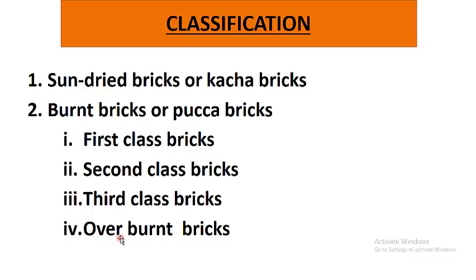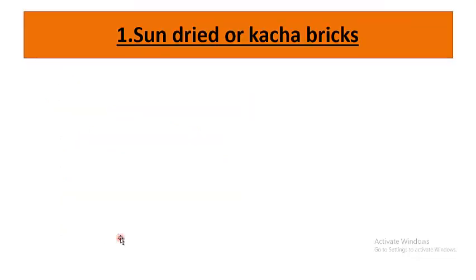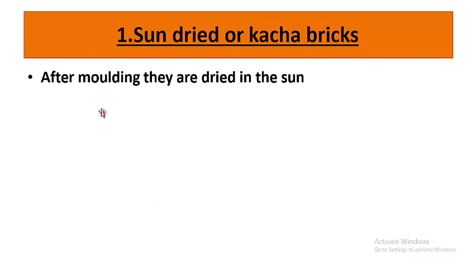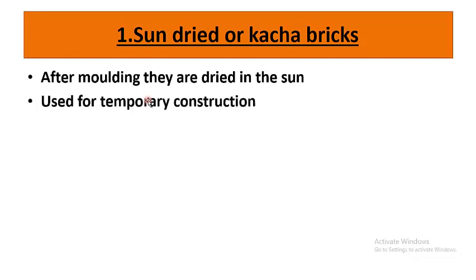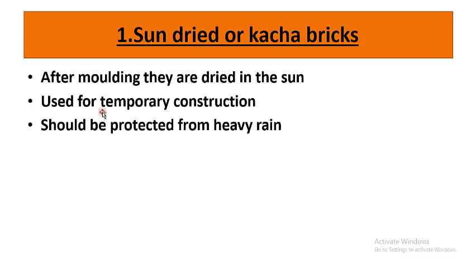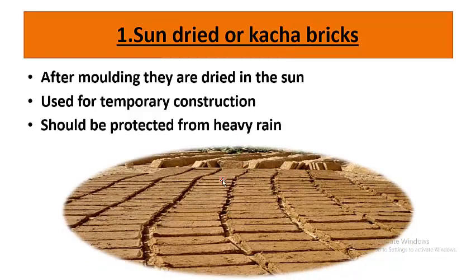Sun-dried or kacha bricks: after molding, they are dried in the sun. These sun-dried bricks are used for temporary construction. As mentioned, they have less strength compared to other bricks. As you can see in this picture, these are sun-dried and not heated or burnt in the kiln, so they have lesser strength compared to burnt bricks.